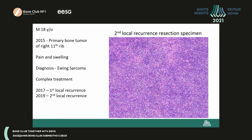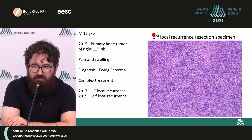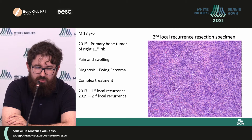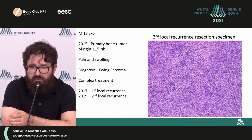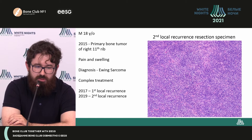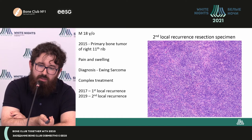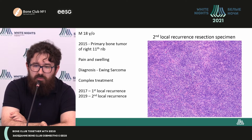I'm going to show a clinical case which was obscure to me. The patient is 18 years of age. I would like to draw your attention that he already has a second local recurrence of the right 11th rib. Back in 2015, the primary bone tumor was first detected. There was radiotherapy and surgical treatment, and there were two relapses — two recurrences in 2017 and the second in 2019.